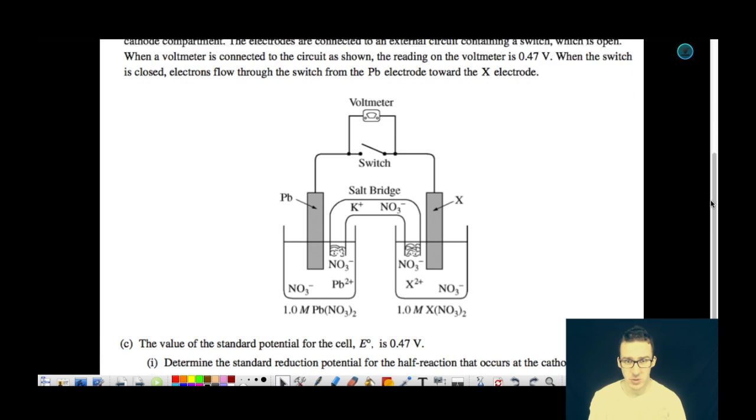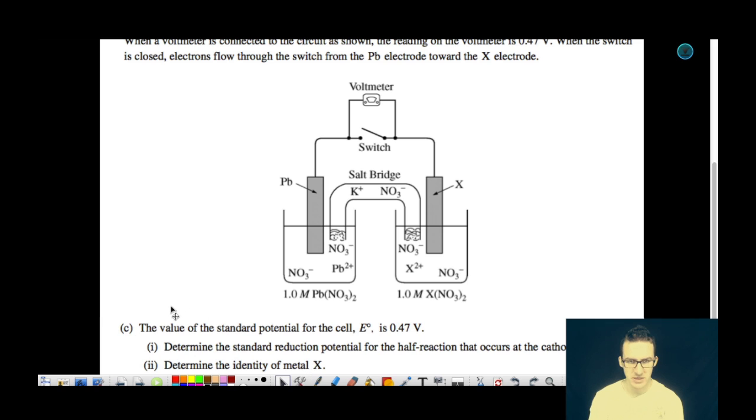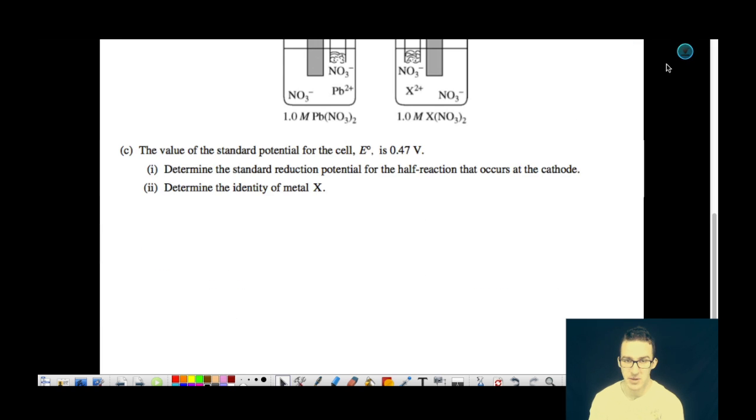Then as we continue to speed through this question, the next part has two parts to it. It says the value of the standard potential of the cell is 0.47 volts. First, we need to determine the standard reduction potential for the half reaction that occurs at the cathode. And then it says to determine the identity of metal X. Let's take that one step at a time. You have to remember that the standard cell potential is determined by taking the reduction potential and adding it to the oxidation potential. Now we're told that the standard cell potential for the cell is 0.47 volts.